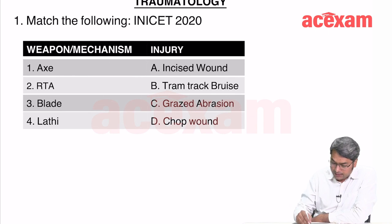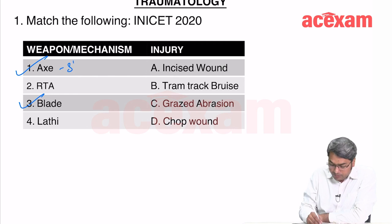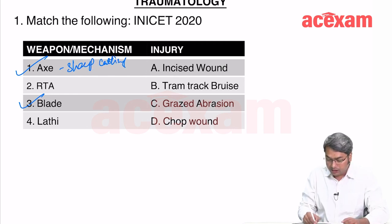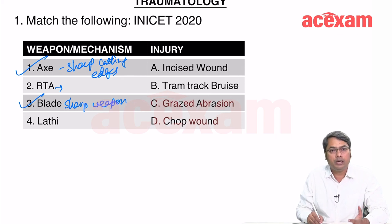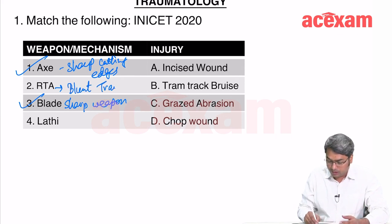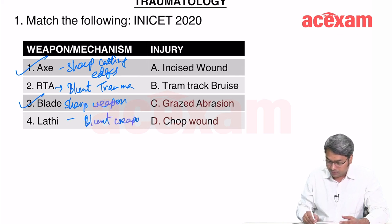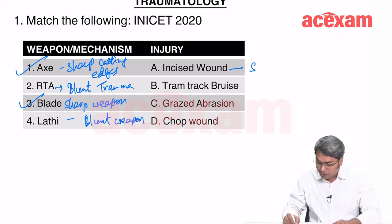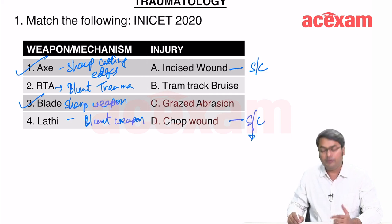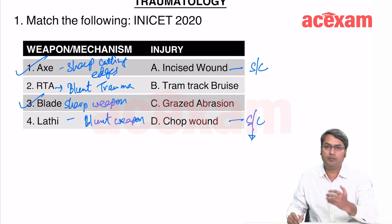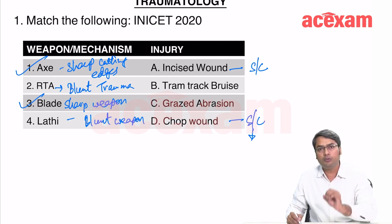Axe and blade are sharp cutting weapons with sharp cutting edges. RTA usually produces blunt injuries, and lathe is also a blunt weapon. Incised wound is produced by sharp cutting, and chop wound is also produced by sharp cutting — the only difference being that in chop wound, the weapon has to be heavy.